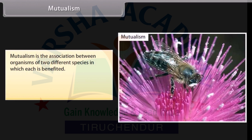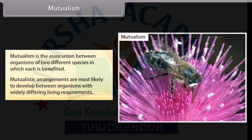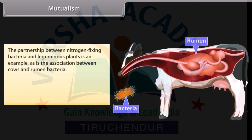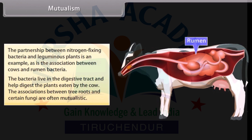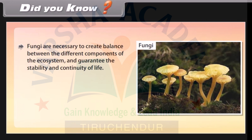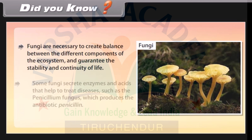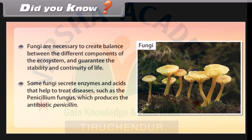Mutualism is the association between organisms of two different species in which each is benefited. Mutualistic arrangements are most likely to develop between organisms with widely differing living requirements. The partnership between nitrogen-fixing bacteria and leguminous plants is an example, as is the association between cows and rumen bacteria — the bacteria live in the digestive tract and help digest the plants eaten by the cow. The associations between tree roots and certain fungi are often mutualistic. Fungi are necessary to create balance between the different components of the ecosystem. Some fungi secrete enzymes and acids that help treat diseases, such as the penicillium fungus which produces the antibiotic penicillin.